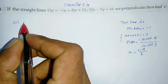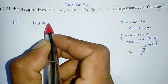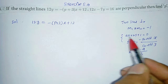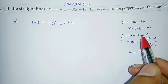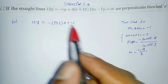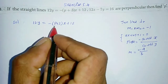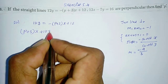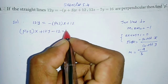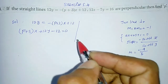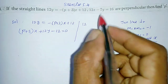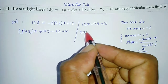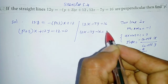Let's look at the solution. First equation: 12y = minus of (p+3)x plus 12. We need to bring this to standard form equal to 0. Rearranging: (p+3)x plus 12y minus 12 = 0. Second equation given is 12x minus 7y = 16. Rearranging: 12x minus 7y minus 16 = 0.